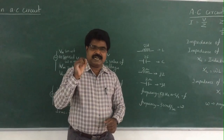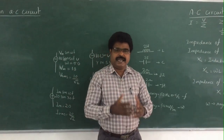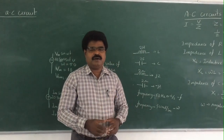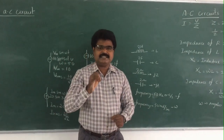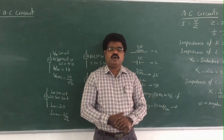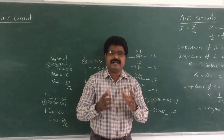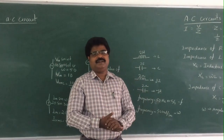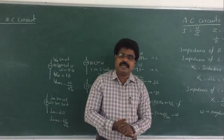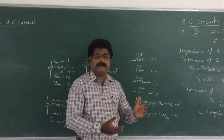Because DC consists of only resistance. But as far as AC circuits are concerned, it is the combination of resistance, inductance, and capacitance. This collective term is called impedance. According to Ohm's law for AC circuits, I is equal to V by Z.